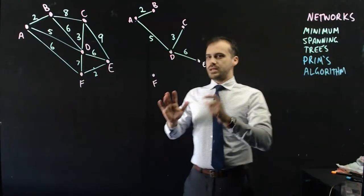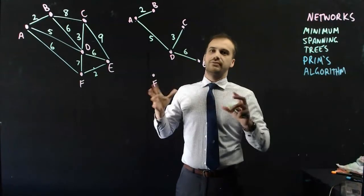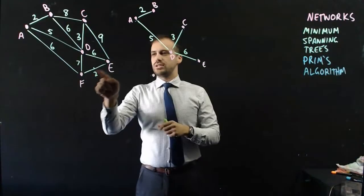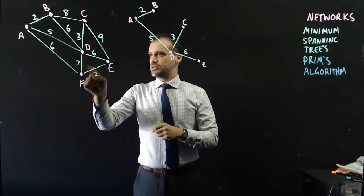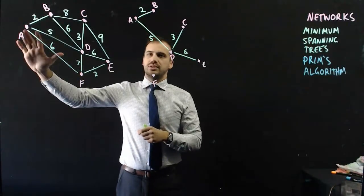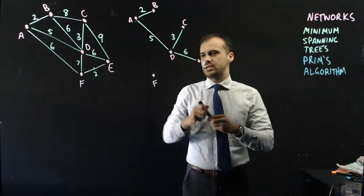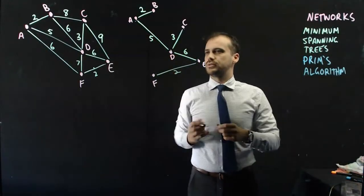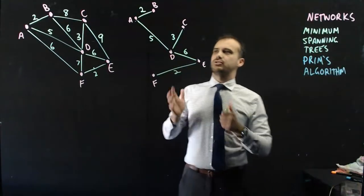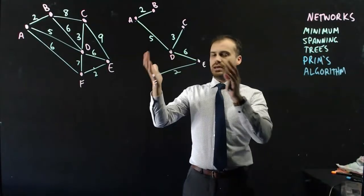Next up, we need to join something to F. And let's consider how can F join the network safely. F can join the network using this road that's 2 long. F can join the network using this road that's 7 long. Or F can join the network using this road that's 6 long. It's clear that F should join the network using this 2. And here we have our minimum spanning tree. Everything is connected and we have a minimum spanning tree.